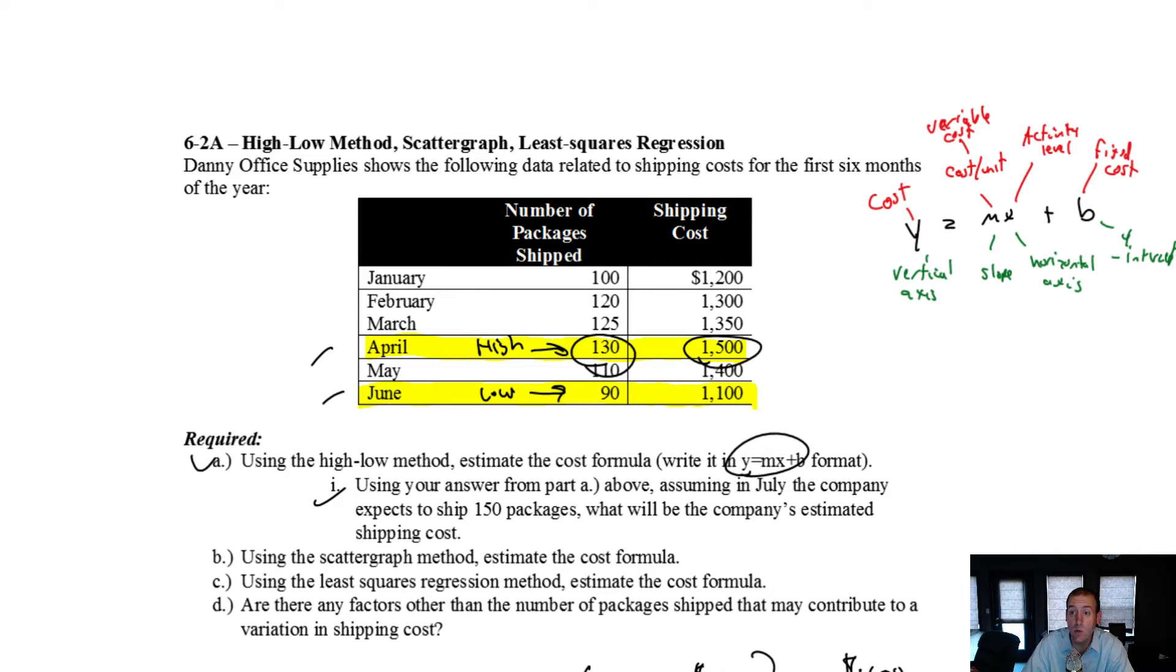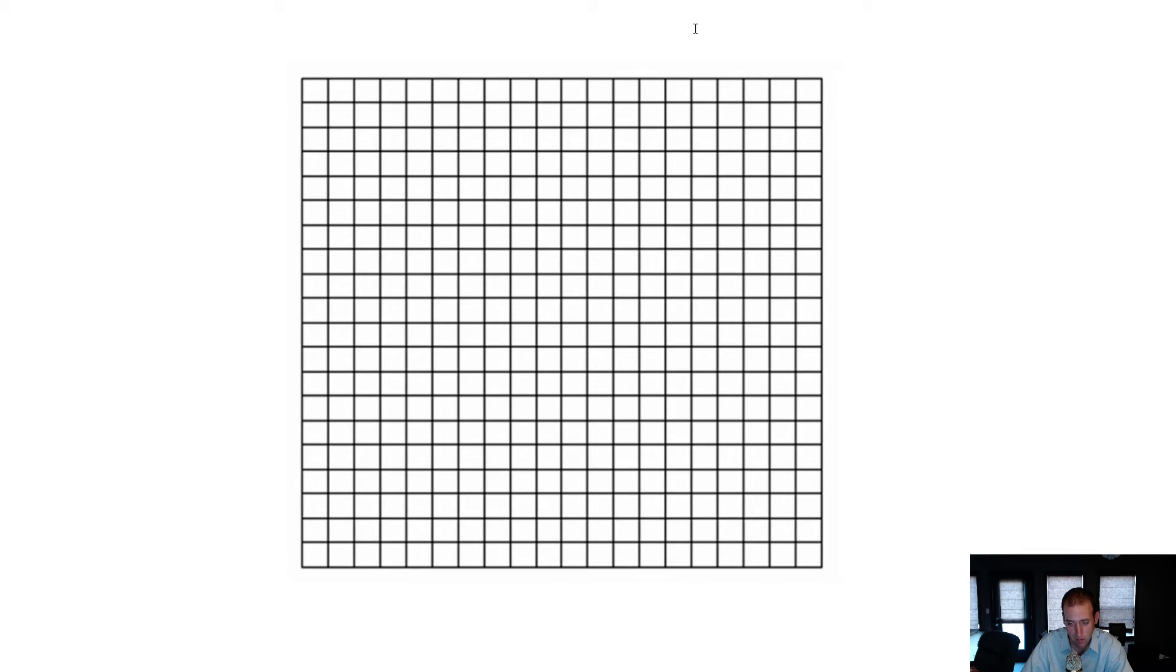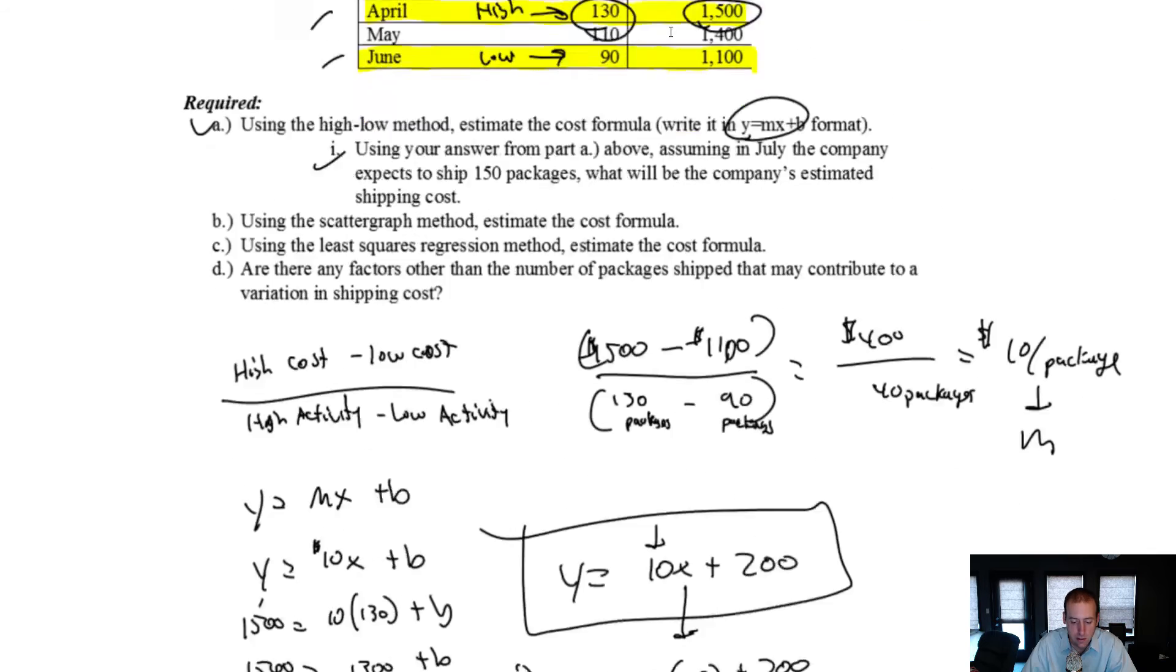Alright, let's continue with 6.2a. We have completed the high-low method. Now we're going to do a scatter graph for this data. To do a scatter graph, it's very helpful to have graph paper or something resembling graph paper, but you can just do it on lined notebook paper and it would be fine.